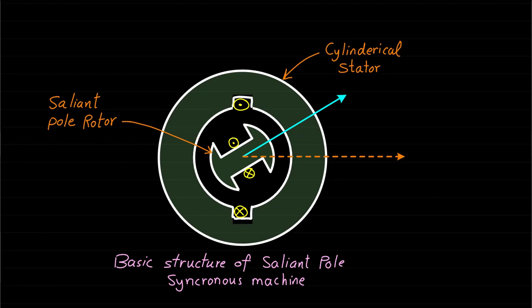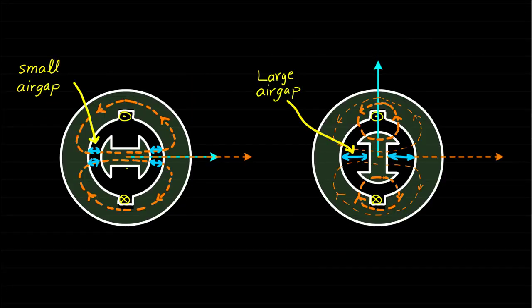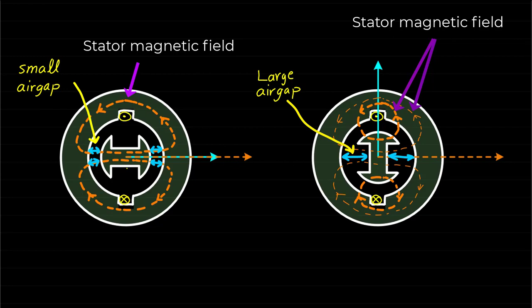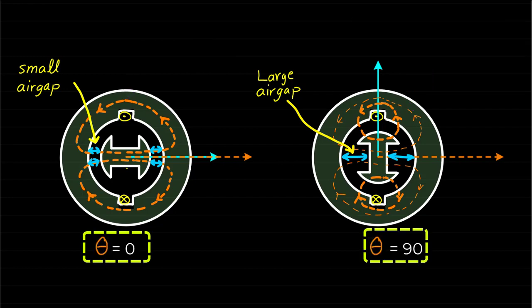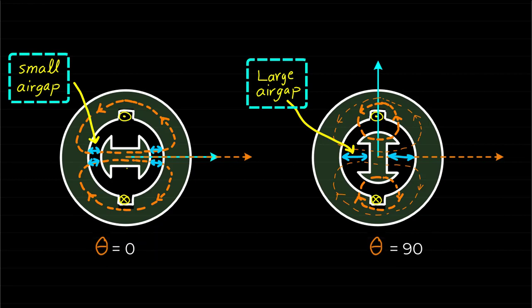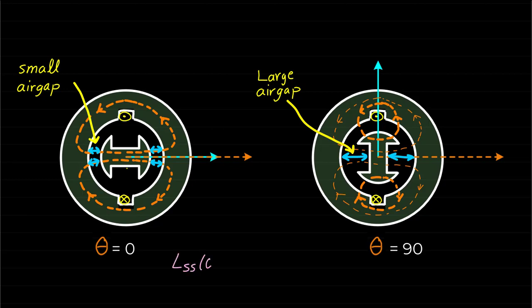Based on this machine geometry, the stator self-inductance LSS is changing with respect to rotor position. These two figures show the stator magnetic field distribution at different rotor positions. The air gap seen by the stator magnetic field is different at different rotor positions, meaning the magnetic field distribution changes. This is why LSS changes with rotor position. Note that thick magnetic field lines represent strong magnetic field and thin lines represent weak magnetic field.